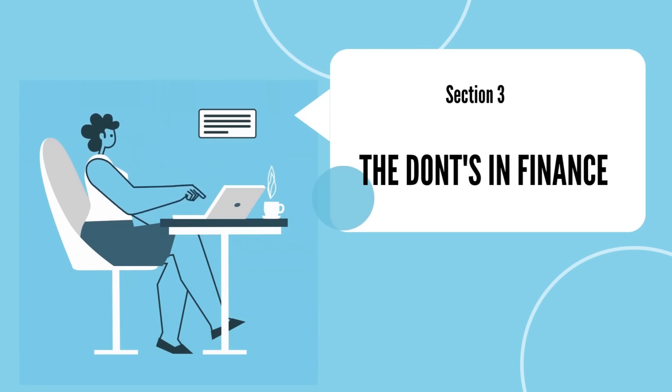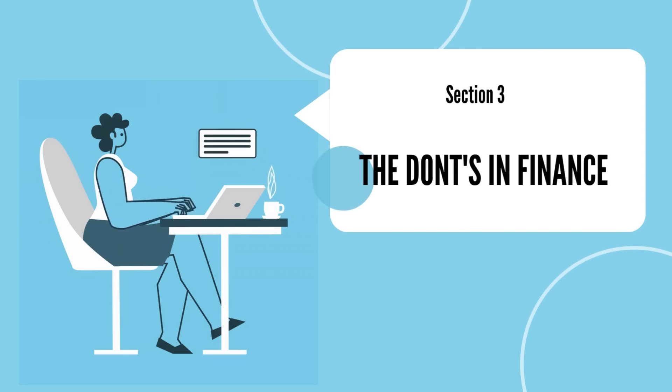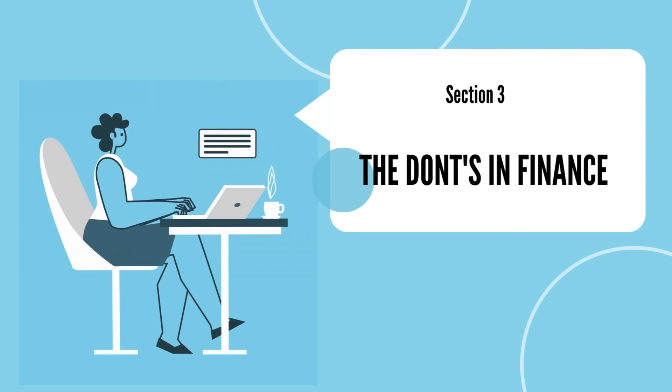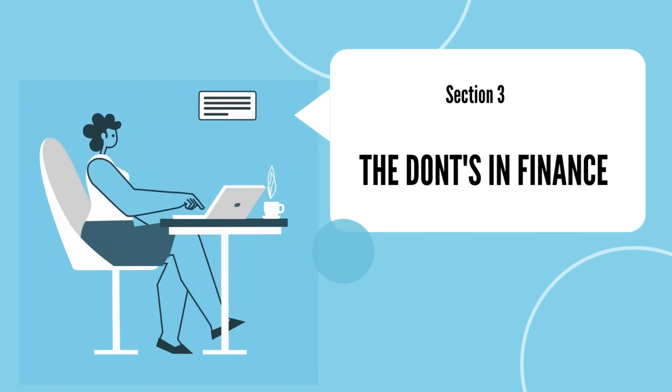The final section 3 deals with observations you have to make and pitfalls that you need to avoid in your business. The section will teach you about the don'ts that you should avoid in finance and also the cons of financial statements. The most important aspects that you might miss out are highlighted in this final section.